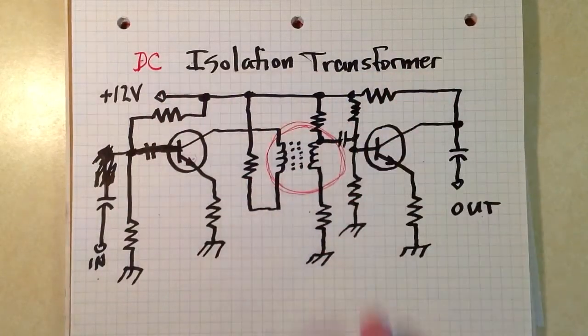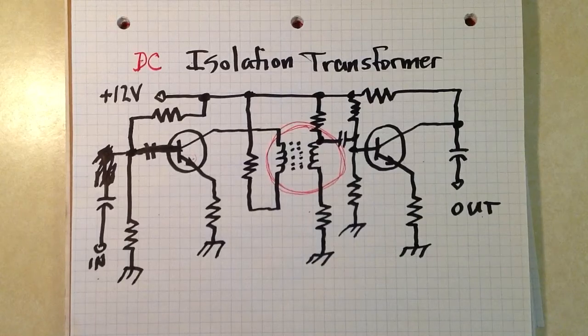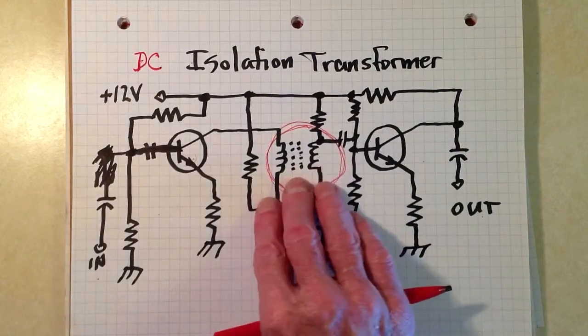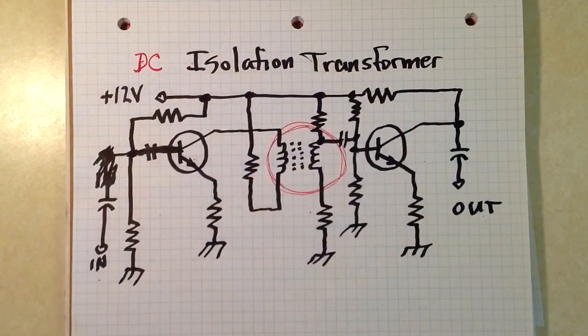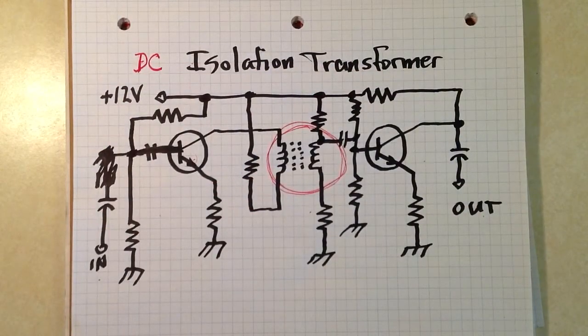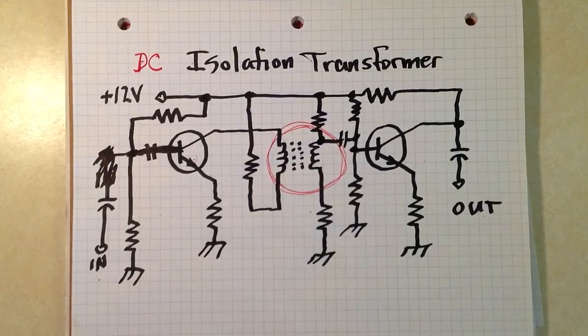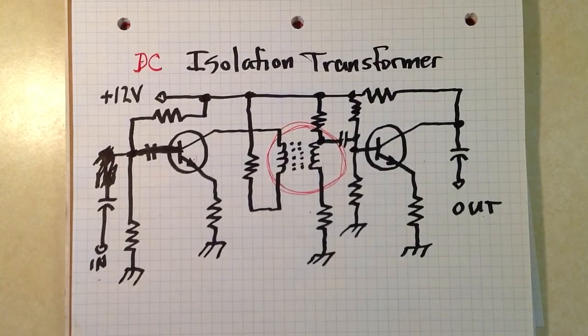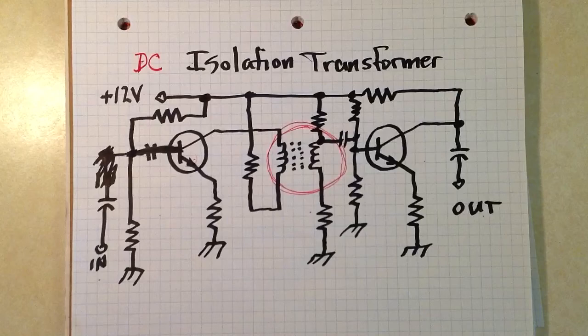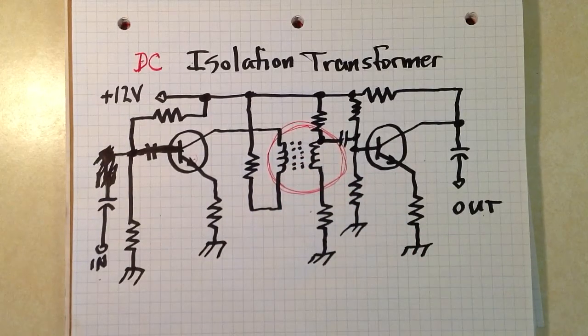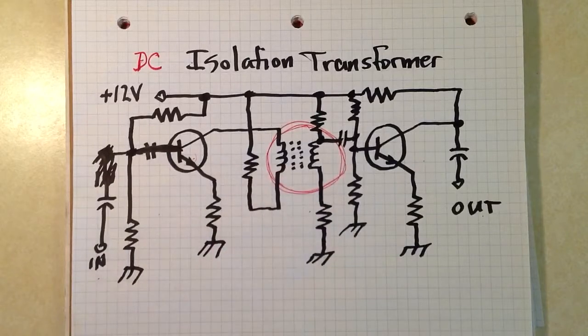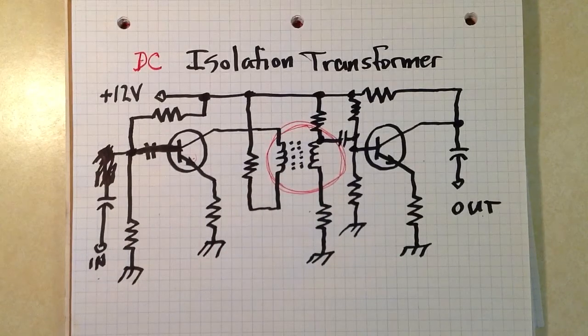But when you hear the term isolation transformer, that is what is meant generally by that term. It is meant to keep DC from interacting between stages while at the same time allowing the AC signal to pass.